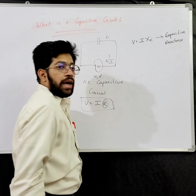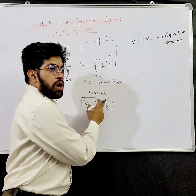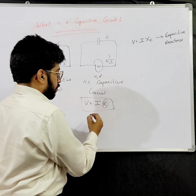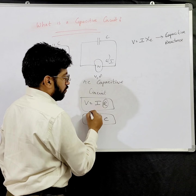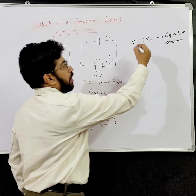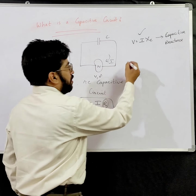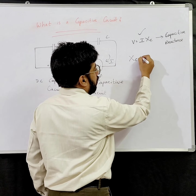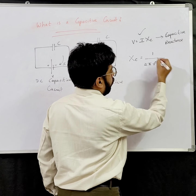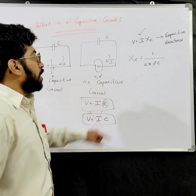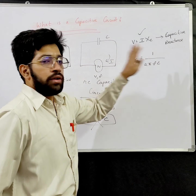You can say that Xc is a compensation for resistance. There is no formula V equals I into C, but we have this formula for capacitive circuits. Now Xc can be obtained as Xc equals 1 divided by 2 times pi times F times C, where F is the frequency and C is the value of the capacitor.